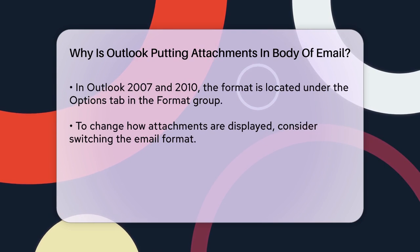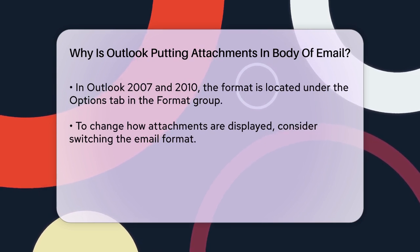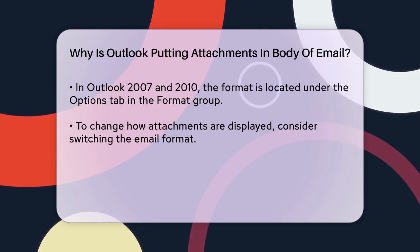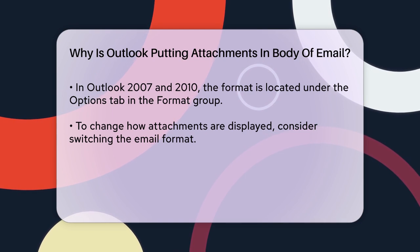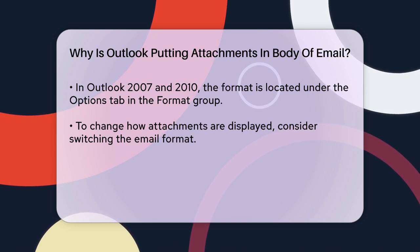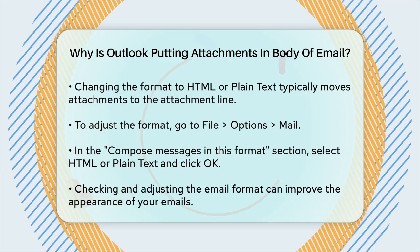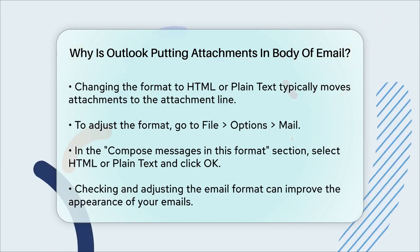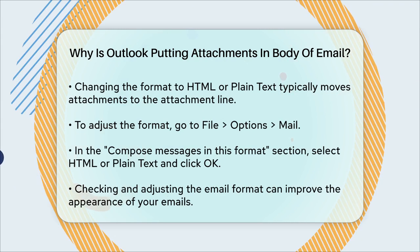If you're in a situation where attachments are showing up in the body and you want to change this, you can switch the email format. For instance, if you change the format to HTML or plain text, the attachments will typically appear in the attachment line instead of the body. Here's how you can do it: go to the File option, select Options, then choose the Mail option. In the Compose Messages in this Format section, select HTML or plain text and click OK.